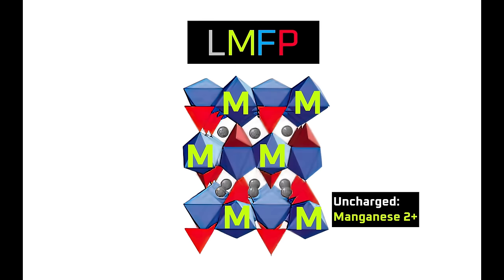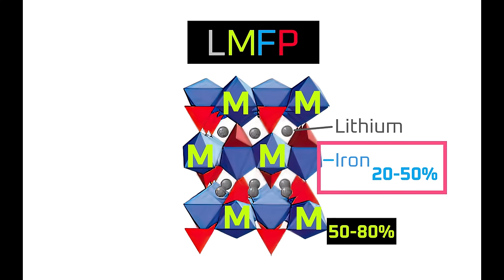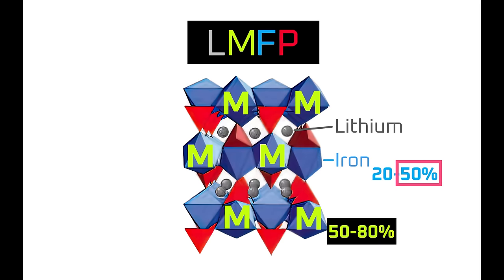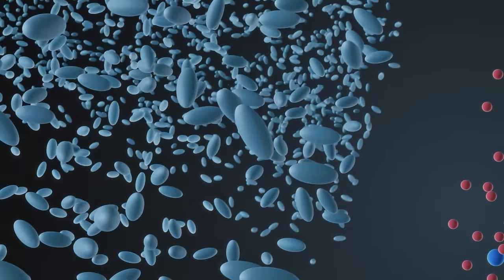What about the dissolution issues with manganese 2+? Those can be mitigated by layering three to four engineering fixes. First, only about 50–80% of the iron is swapped out for manganese in LMFP chemistries. The iron is much less likely to dissolve in the electrolyte than the manganese, so one way to reduce dissolution is to stick closer to 50% iron in the cathode formulation. However, that doesn't fundamentally solve dissolution issues — it only reduces them.